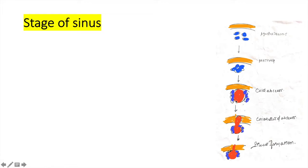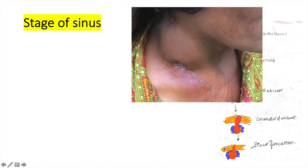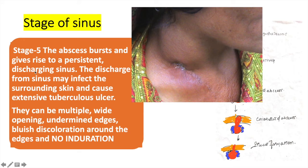Finally, the last stage is the stage of sinus formation. The pus, which was confined by the deep fascia and then the skin, now ruptures through the skin and forms a persistent discharging sinus. The discharge from the sinus can infect the surrounding skin, causing an extensive tuberculosis ulcer. The sinuses can be multiple, may have a wide opening, undermined edges, a bluish discoloration around them, and no induration.